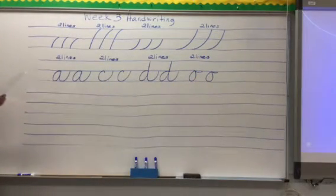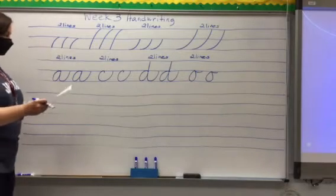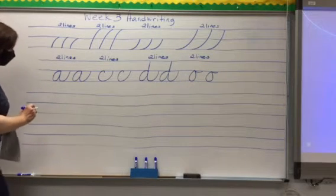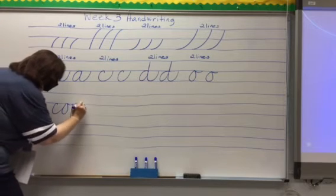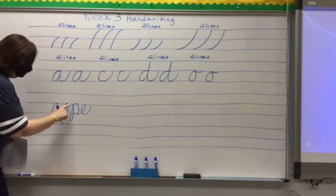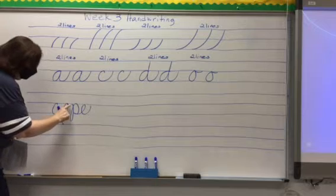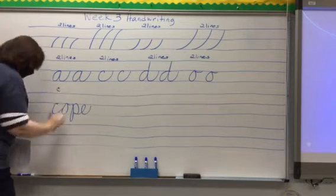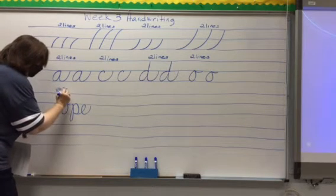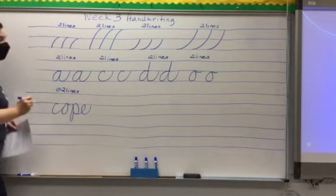With these letters we are practicing four words. The words are COPE, C, O, P, E. Now notice because O ends at the middle line, you come out and then drop into your P. You're going to do two lines of COPE.